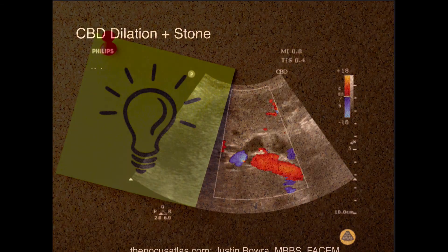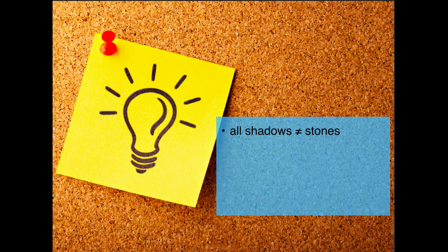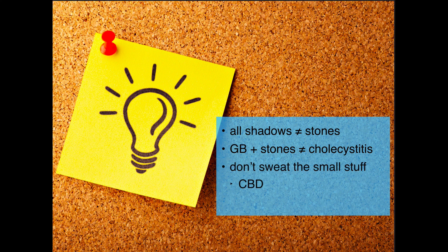So that is the end. Just remember a couple of things: not all shadows are stones — you can get edge artifact on the walls. Gallbladder plus stones does not always equal cholecystitis; you have to have some of those other pathologic findings we discussed. And if you're unable to find the common bile duct, if it's really small, it's more likely normal. Studies have shown that in the absence of other abnormal pathologic findings, if you're unable to find the common bile duct, it's very unlikely that there's any abnormal pathology. Good luck this week. Keep practicing — the gallbladder can be a frustrating exam to do, but the more you practice, the more you'll be able to find it and be more successful.